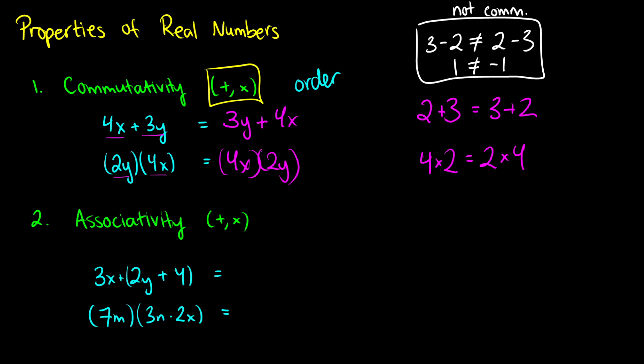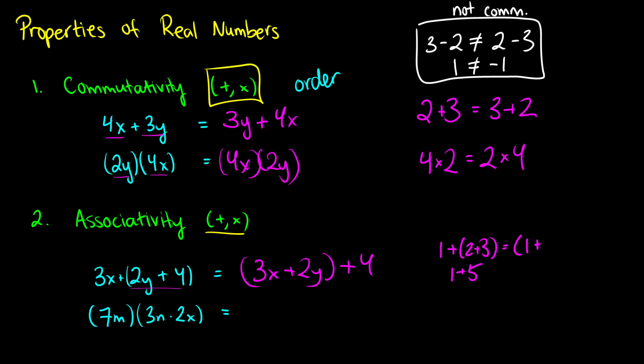Associativity is the second concept, and it also applies to addition and multiplication. It means that if you're adding or multiplying three things together, it doesn't matter which ones you combine first. In the example 3x plus (2y plus 4), even though brackets indicate we do 2y plus 4 first, changing it to (3x plus 2y) plus 4 gives the same result. For example, 1 plus 2 plus 3: whether you add 2 plus 3 first to get 1 plus 5, or add 1 plus 2 first to get 3 plus 3, both give 6.